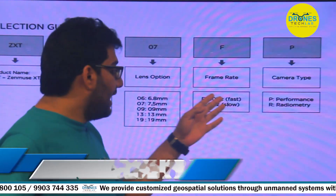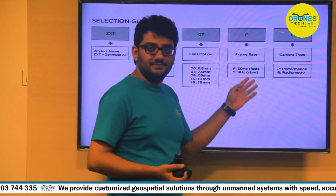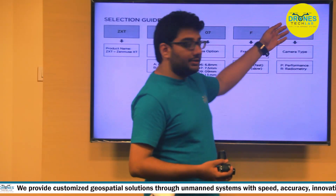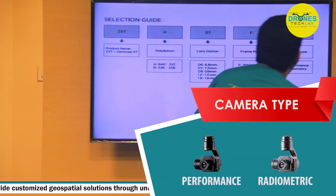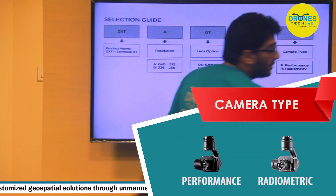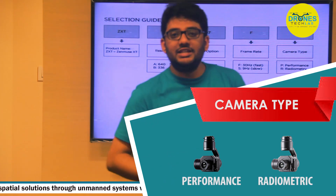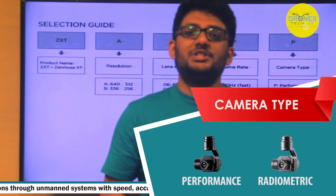The 30Hz frame rate is only permitted in the USA, while the 9Hz is used for the rest of the world. The last and final character stands for the camera type, which is either Performance or Radiometry, and I'll explain this in detail to help you determine which is best suited for your purpose.